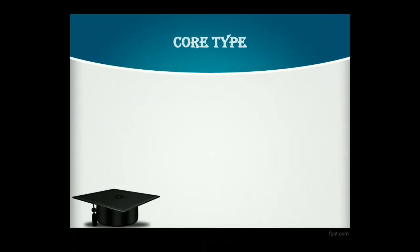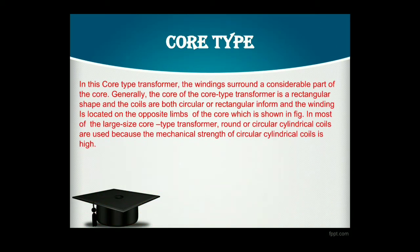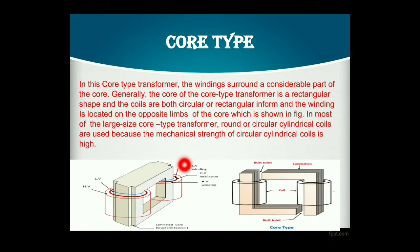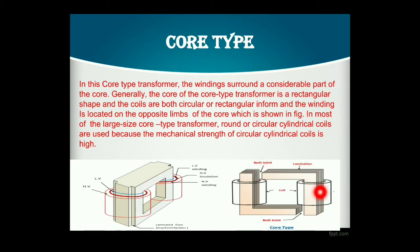At first, the core type transformer. Here you can see the image of a core type transformer. This is the core and this is a winding. You can see how the core is constructed — this is the laminated core. These two L-sections are connected with each other to form the core. In this core type transformer, the winding surrounds a considerable part of the core.